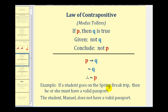Here's an example: if a student goes on the spring break trip, then he or she must have a valid passport. If we know this to be true and we're given that the student Manuel does not have a valid passport, we can logically deduce that Manuel will not go on the spring break trip. This is a valid form of deductive reasoning.